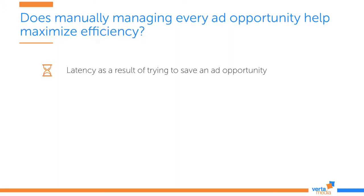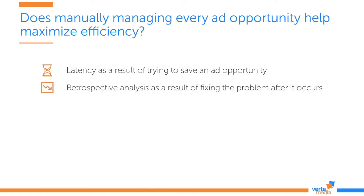He can only fix a problem when it occurs, because what he has is just a retrospective analysis of what already happened. And of course, people make mistakes — so this kind of decision making can result in human error.